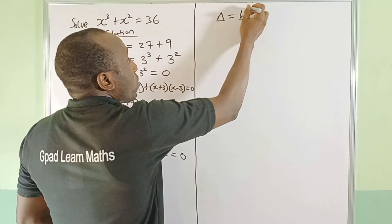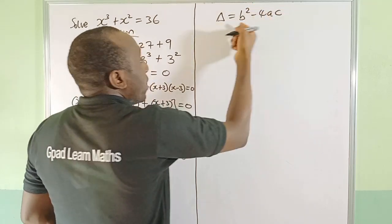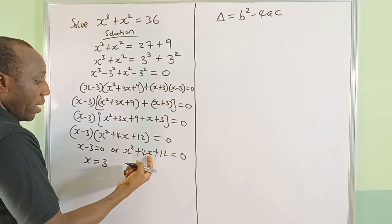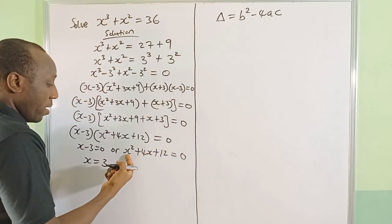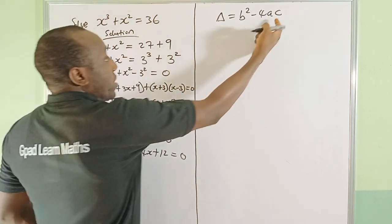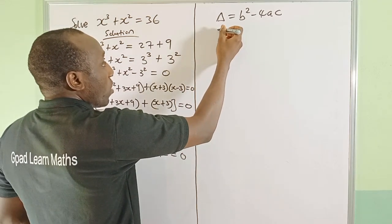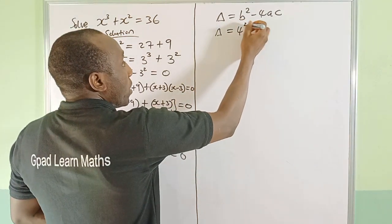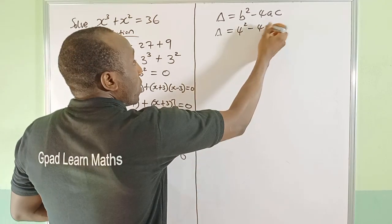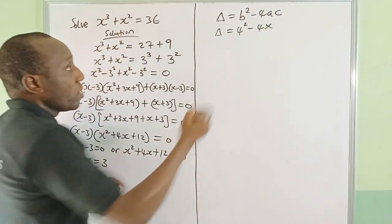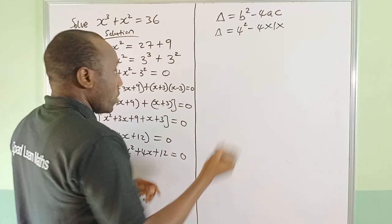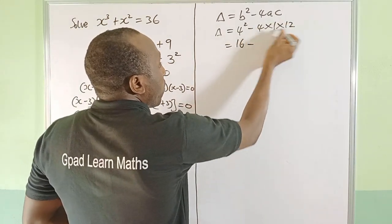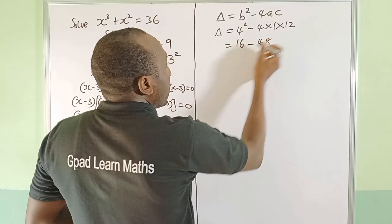Discriminant is b² - 4ac. Now b is the coefficient of x which is the middle term, a is the one with leading power, c is the constant term. Let's test this out. b is 4, so 4² - 4 × 1 × 12. This is 16 - 48.